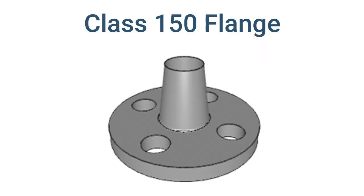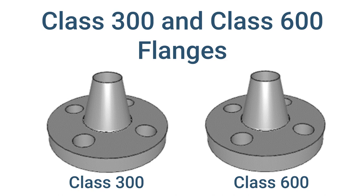Let's take a closer look at a few commonly used flange classes. Class 150 flanges are the most common and widely used in general applications. They are suitable for lower pressure systems and offer a cost-effective solution. Moving up the scale, we have class 300 and class 600 flanges. These classes are designed for higher pressure applications such as oil and gas pipelines or chemical processing plants. They provide enhanced strength and durability to withstand more demanding operating conditions.